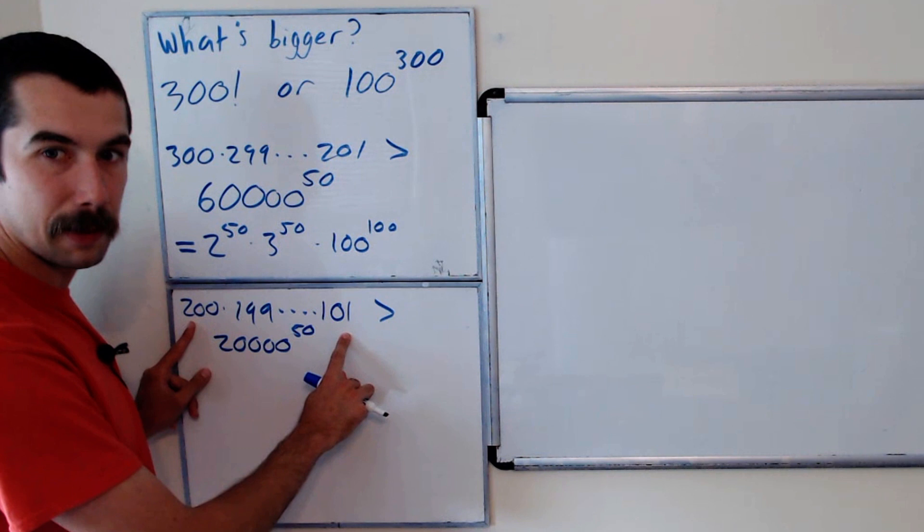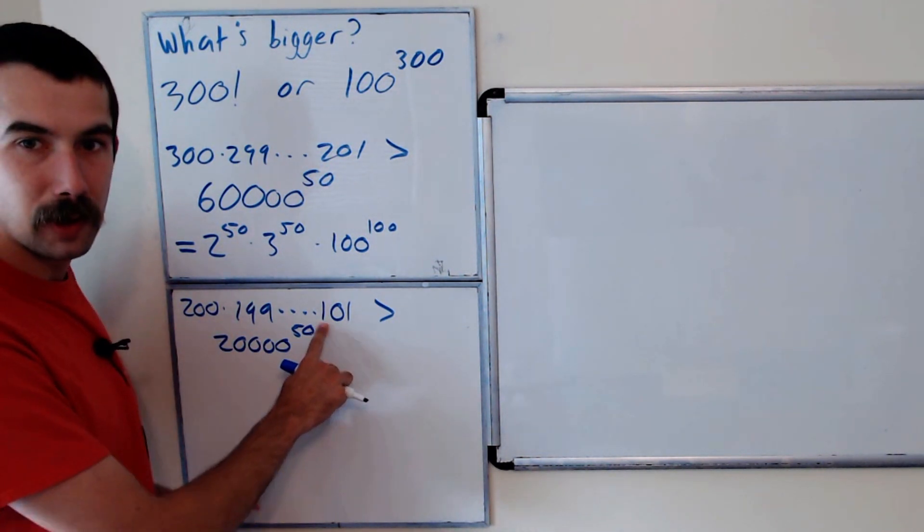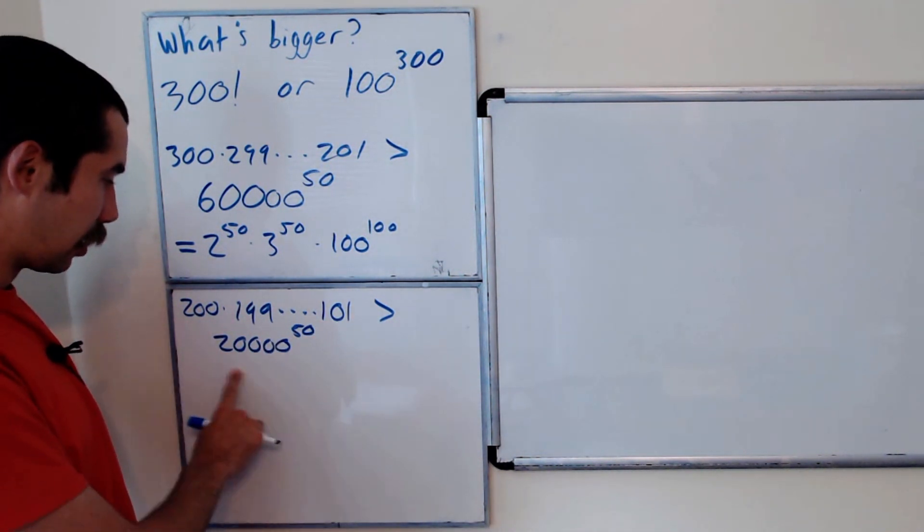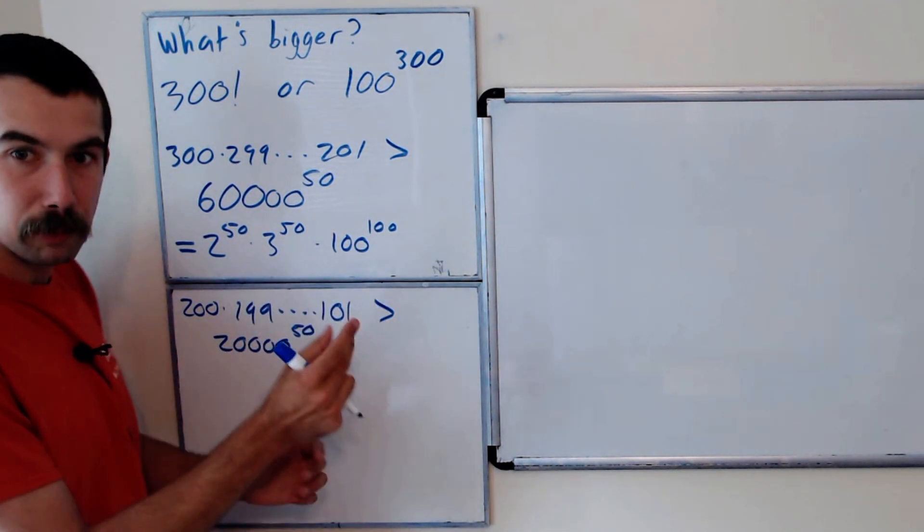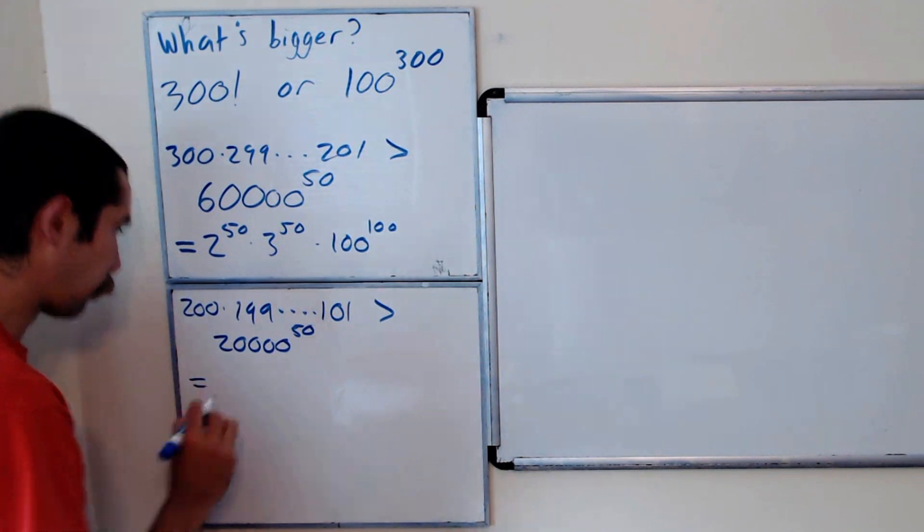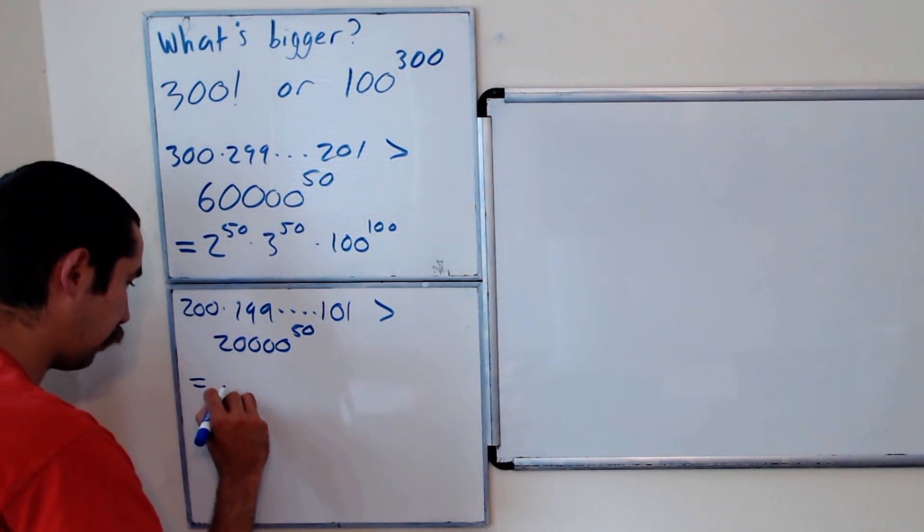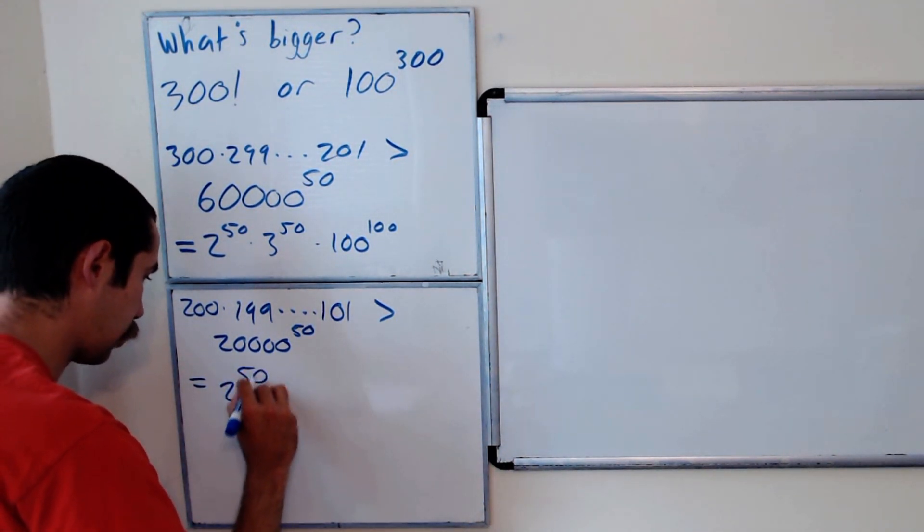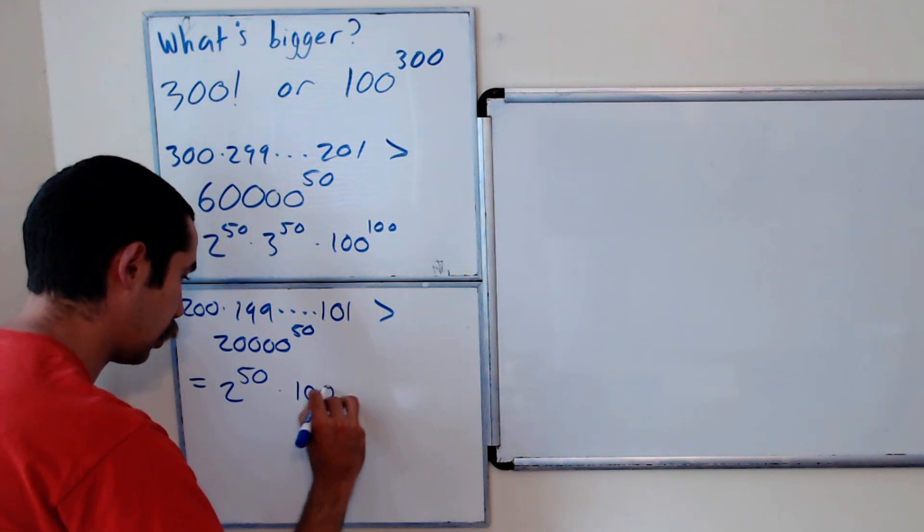and each of these terms is greater than 20,000. And there's 50 pairs that we're going to multiply together. But that's equal to 2 to the 50 times 100 to the 100.